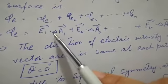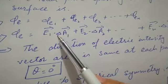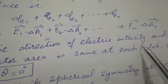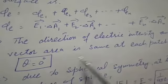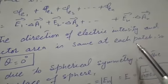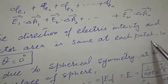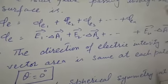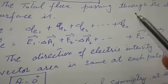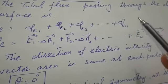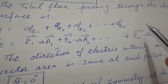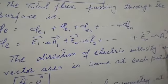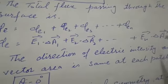The dot product means cos θ: E·ΔA·cos θ. The direction of electric field intensity and the vector area is the same at each patch. We have also seen that for a sphere, if the vector area is in the outward direction, then E is also in the outward direction. The charge is at the center, and in all directions there are equal electric lines of force.